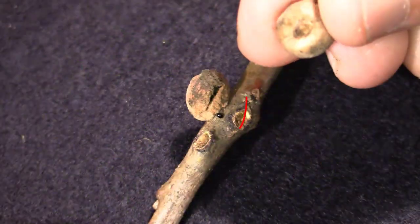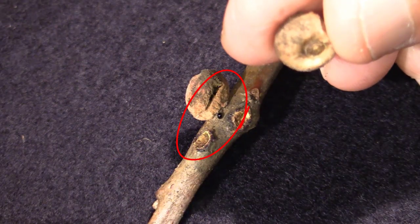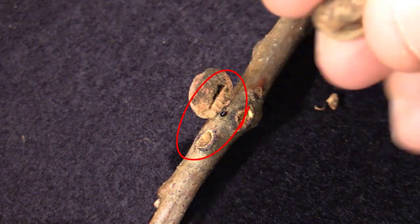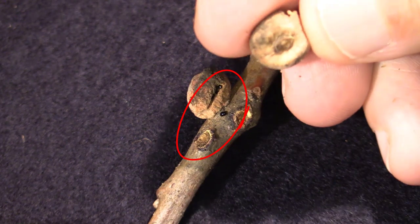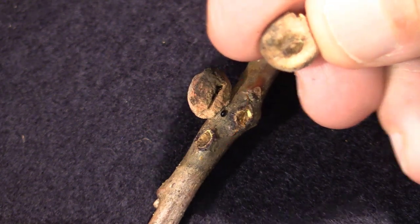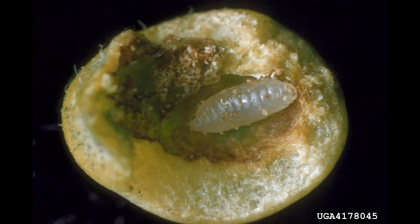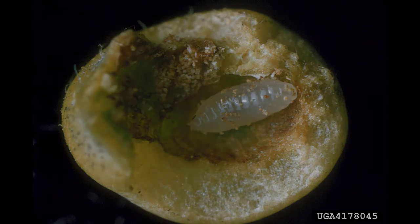Galls can also be home to insects that move in after the gallmakers have left. The predators and parasites of galls are not so polite — they actively hunt for galls so they can eat the gallmaker and live in their house.